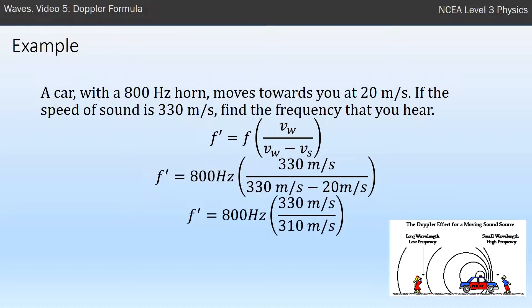Simplify it and so you see the 330 minus 20 gives you a smaller number on the bottom of the fraction. It gives you 310. And your calculation, you end up with 851 Hz, a higher frequency than what you started with. So that kind of makes sense.